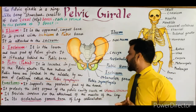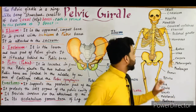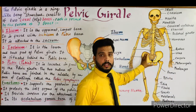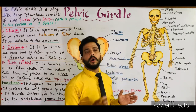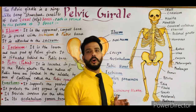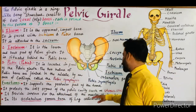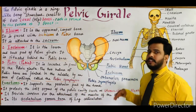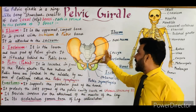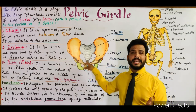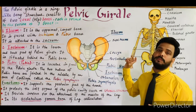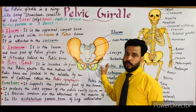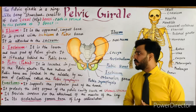Function three: the pelvic girdle provides a surface for the attachment of the muscles of the leg — all the muscles of the leg are attached to the pelvic girdle. Function four: in its acetabulum, the femur bone of the leg articulates. The pelvic girdle consists of depressions or pits known as acetabulum, and the head of the femur of the leg joints with these acetabulum.